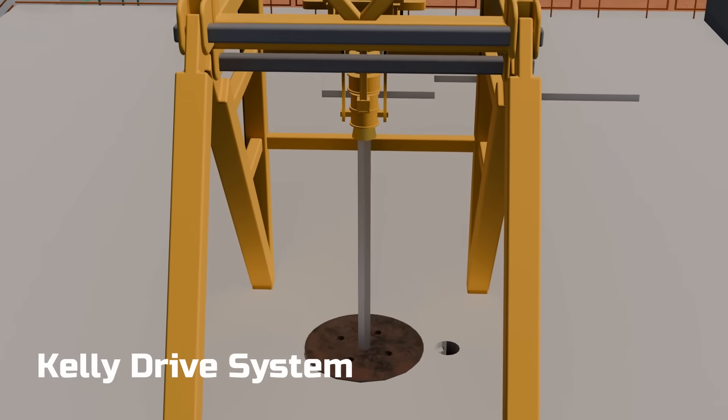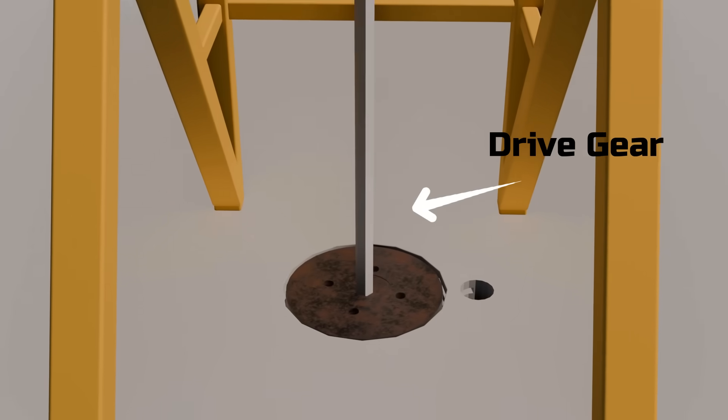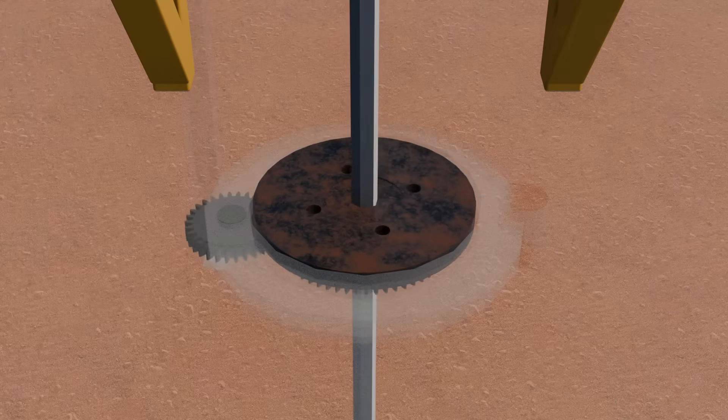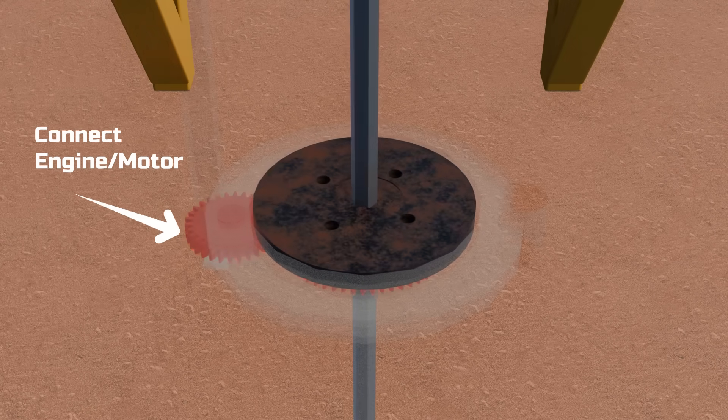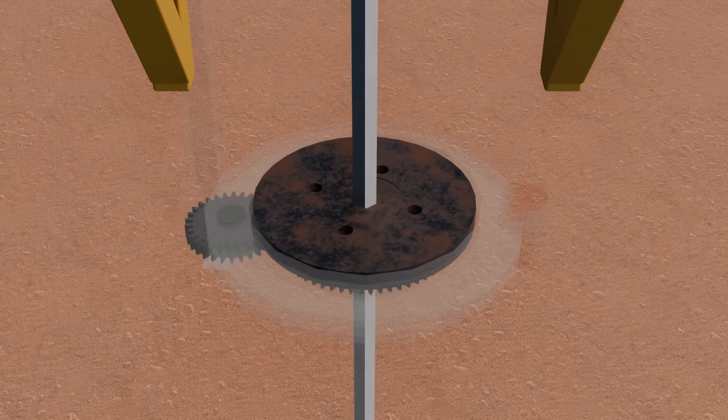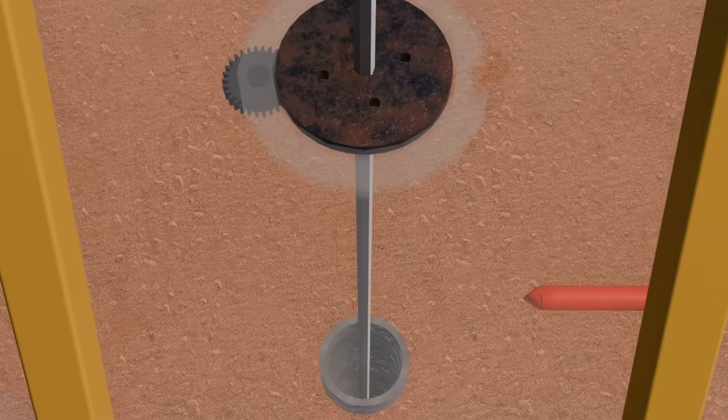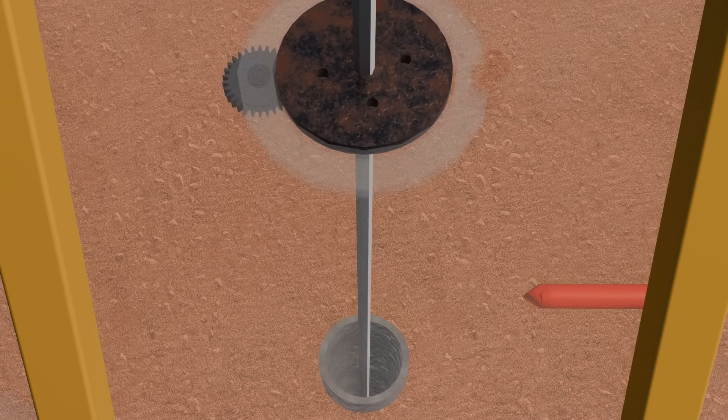The main kelly rod used in drilling has a hexagonal shape and fits into the drive rod. The drive rod is equipped with gears that can be rotated by an engine or motor. As a result, when the drive rod turns, the kelly rod also rotates. While the kelly drive involves direct mechanical contact, it is designed with robust cooling and lubrication systems to manage friction and heat safely.